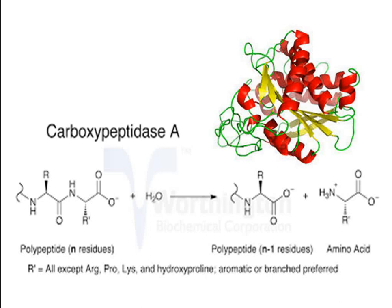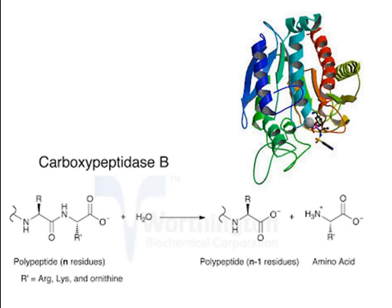Several exopeptidases, which remove terminal amino acid residues from polypeptide chains, are also well known. For example, bovine pancreatic carboxypeptidase A is a monomeric enzyme containing one zinc ion per molecule. It breaks polypeptide bonds at the C-terminal of all amino acids except arginine, proline, lysine, and hydroxyproline, with a preference for aromatic or branched-chain amino acids. It is produced when trypsin removes peptide fragments from the zymogen pro-carboxypeptidase A. A very similar enzyme, carboxypeptidase B, has specificity for C-terminal amino acids with basic side chains — arginine, lysine, and ornithine — and is also secreted as a zymogen by the bovine pancreas.